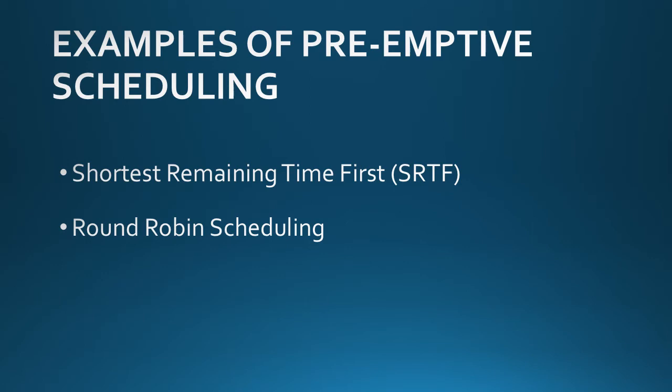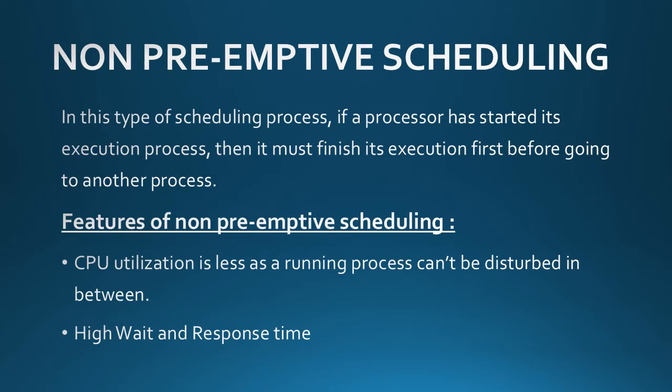Now let us discuss non-pre-emptive scheduling. In non-pre-emptive scheduling, agar koi processor koi process execute kar raha hota hai, toh it must finish that process first before going to another process. Unlike pre-emptive scheduling, hum middle mein kisi aur process ko execute nahi kar sakte — pehle usi process ko finish karna padega.